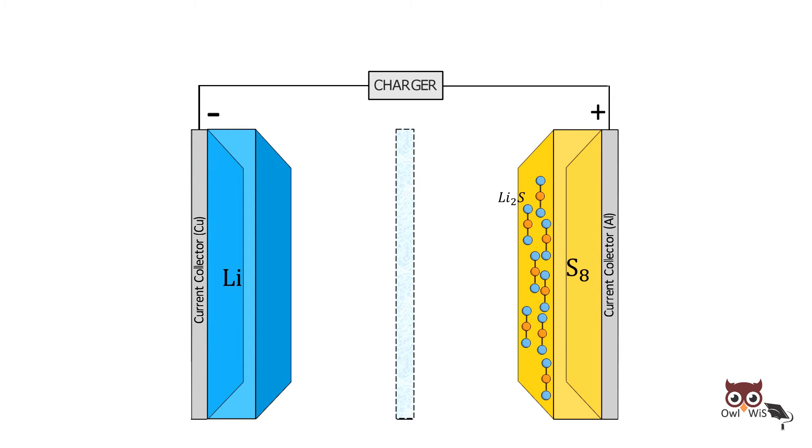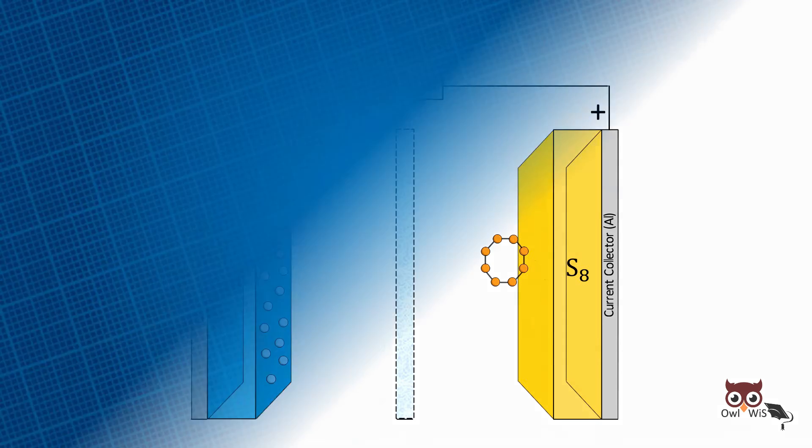During charge, lithium sulfide gets oxidized to sulfur and releases lithium ions which migrate to lithium electrode through the electrolyte. During charging, reverse lithium plating occurs on lithium metal electrode.